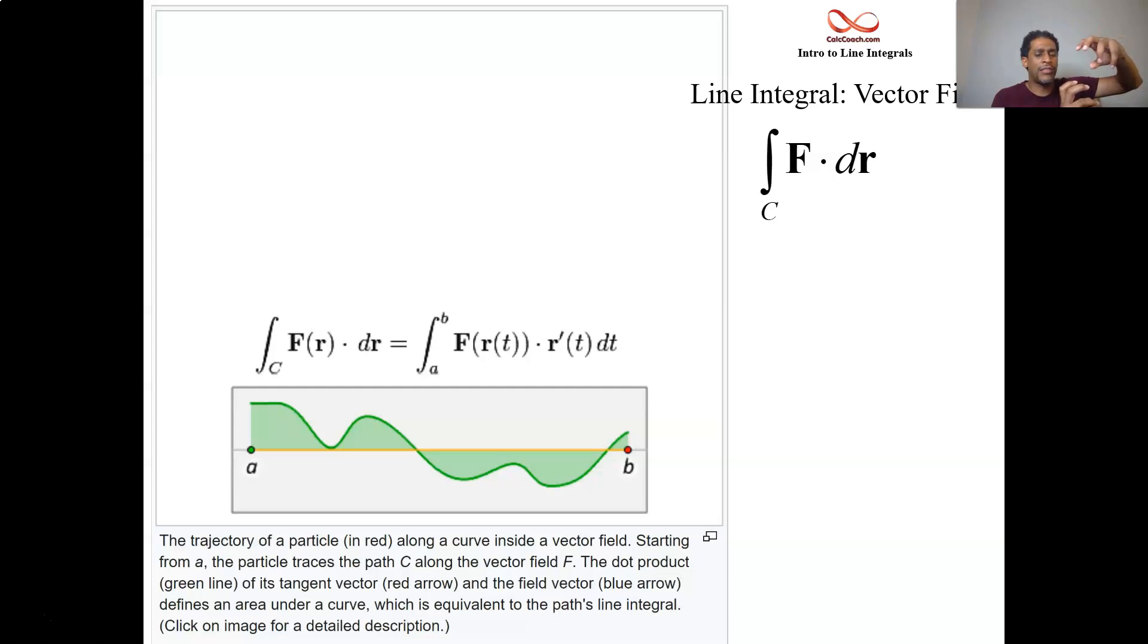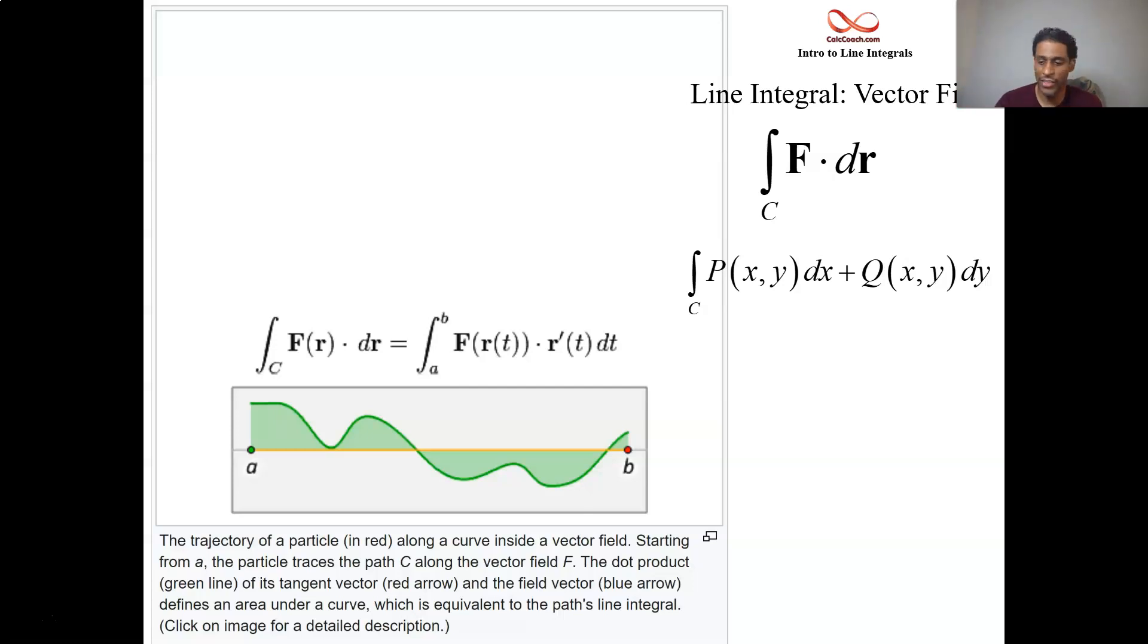When we take this derivative we get dx and dy. So if we're dotting, we're going to have P dx and Q dy. Our line integrals look different than we have before. Before we had a multivariable function times ds. This is two multivariable functions, one times dx and one times dy.